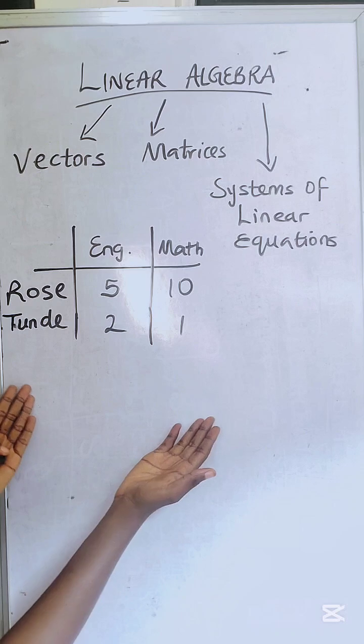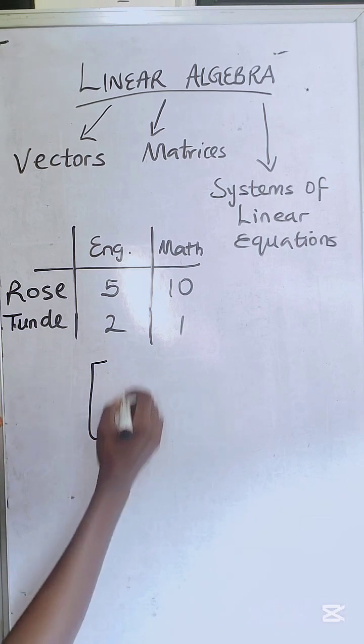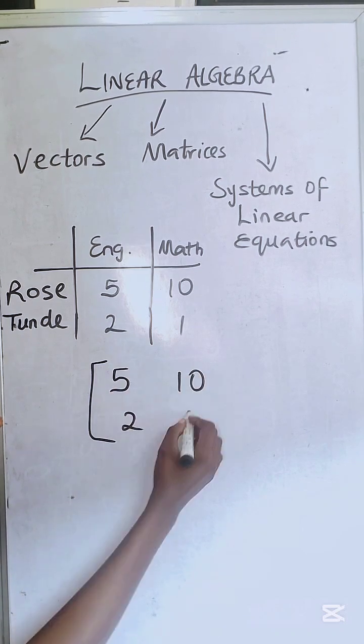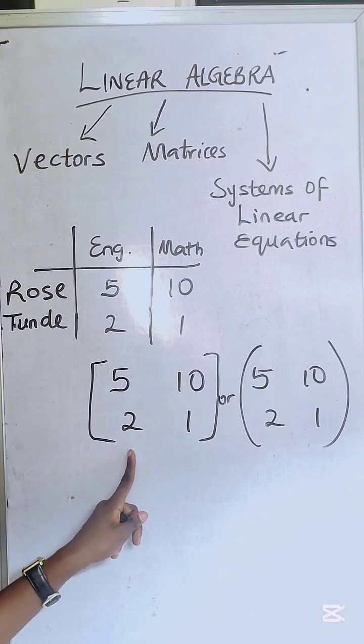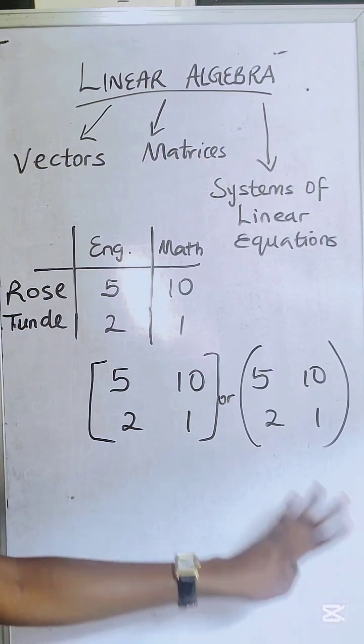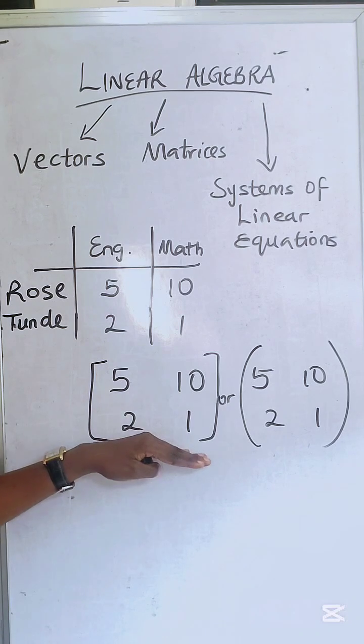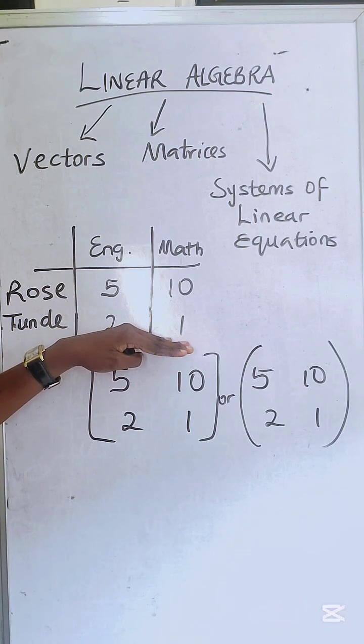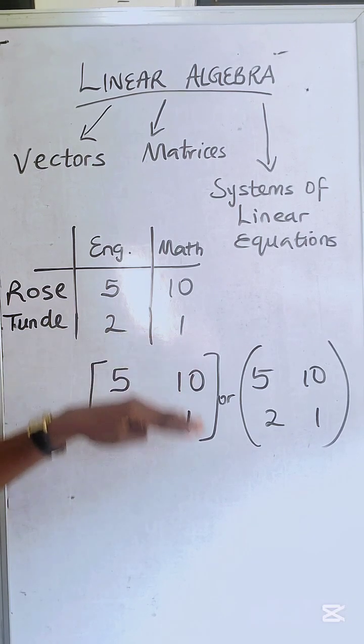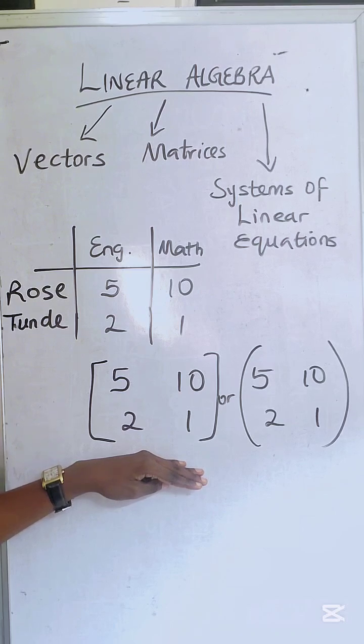This table of numbers can be represented using a matrix. You can use a square bracket or you can use braces but it's advisable that you work with square brackets. This is the same as this. We only represented this using a table while we represented this using a matrix.